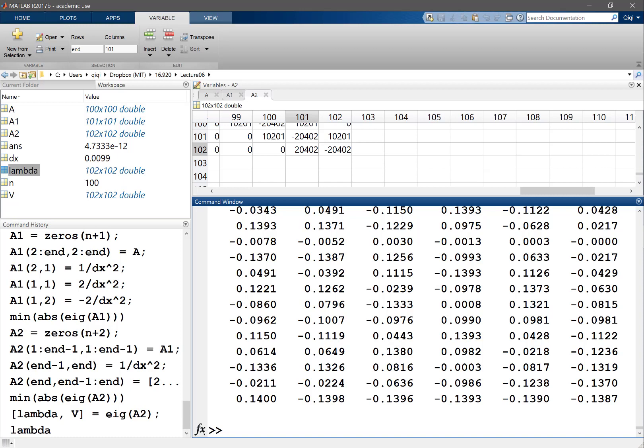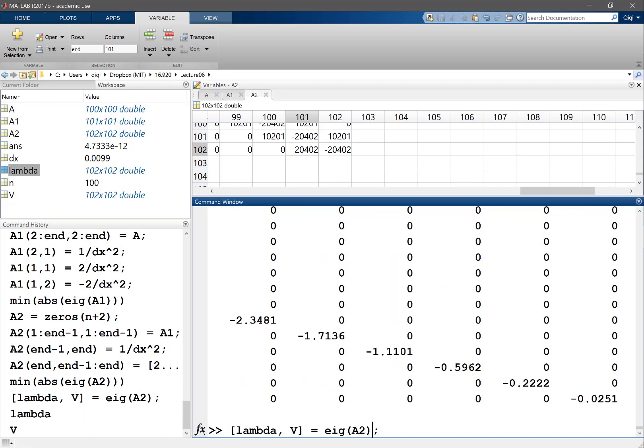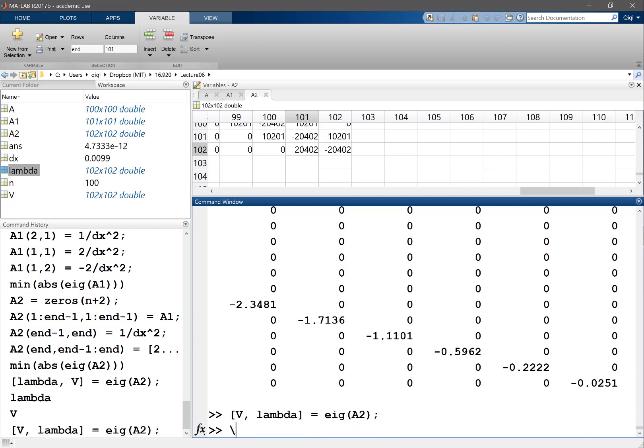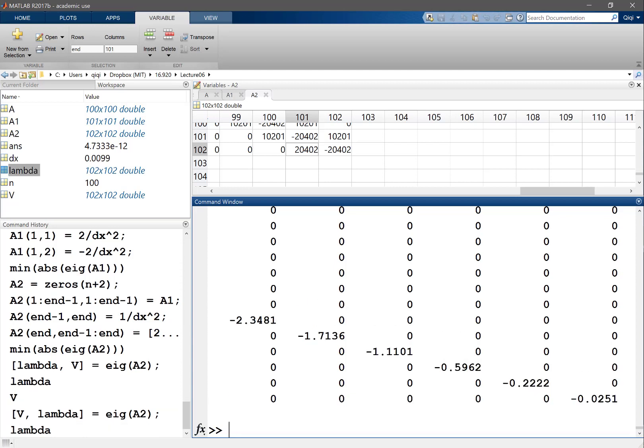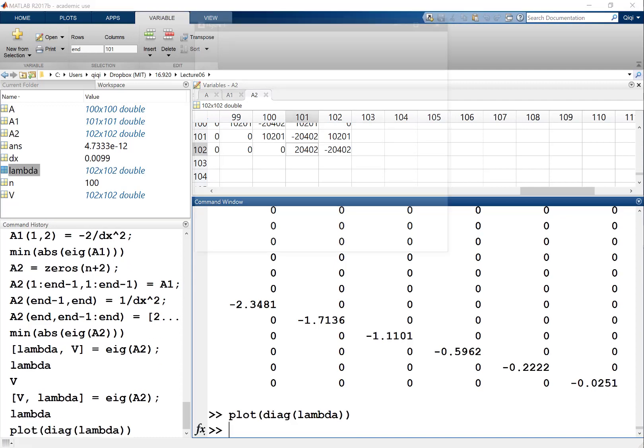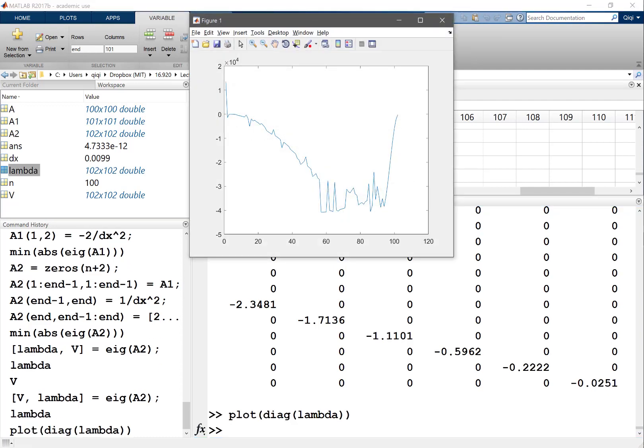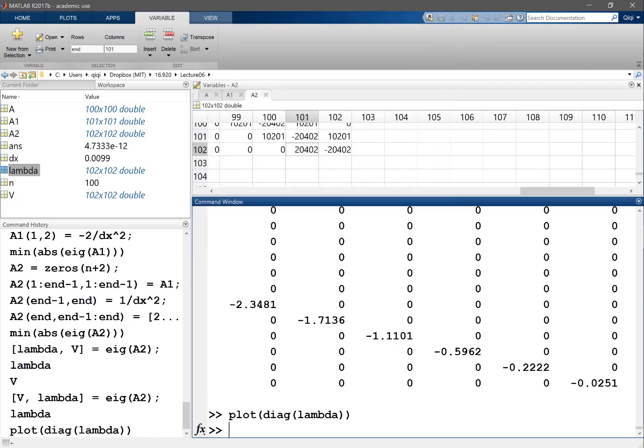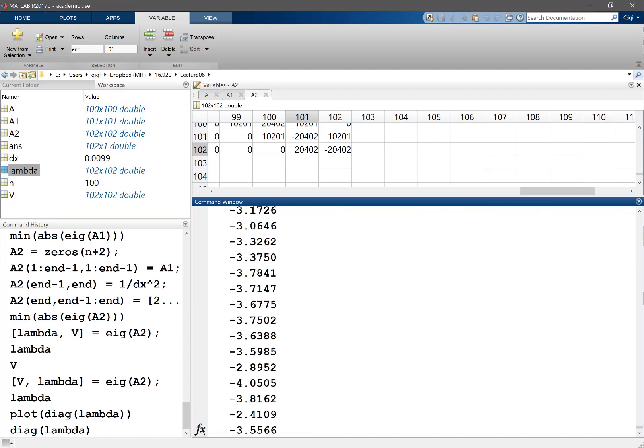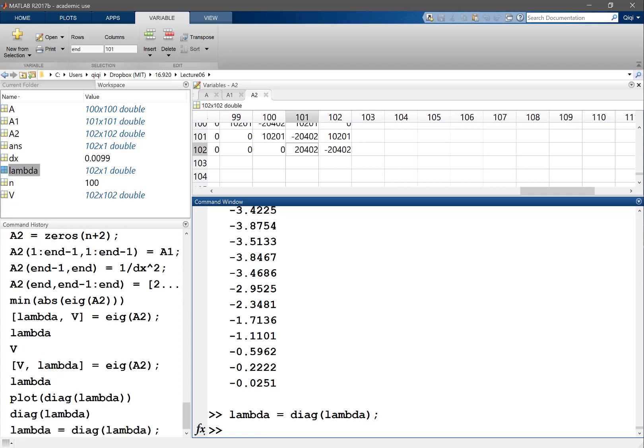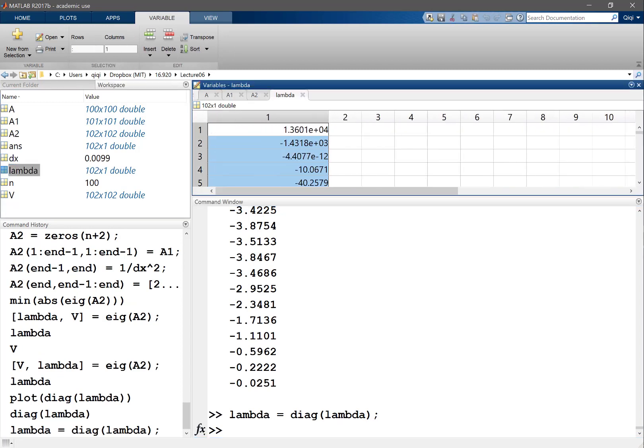So basically not only I get the eigenvalues, right? Lambda is basically, did I do it the other way? I think I did the other way. It should be V and lambda. Sorry. So V is the eigenvector and lambda is the eigenvalues. And if you look at lambda, where can I find the first one? So that's diag of lambda. So, okay, whichever is zero, I guess. So diag of lambda, let's find out which one gives me zero.